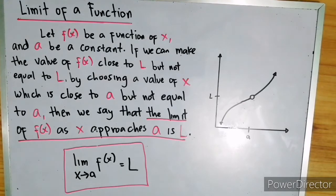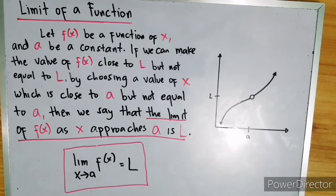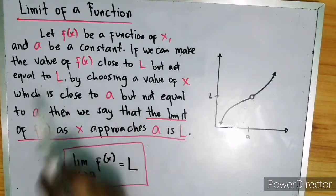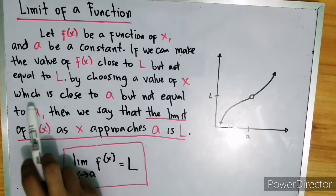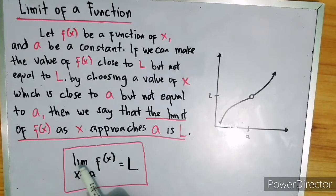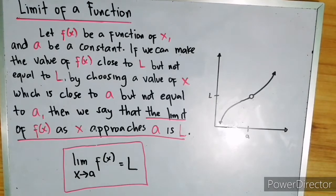So let's start with the definition of limit. Let f of x be a function of x and a be a constant. If we can make the value of f of x close to L but not equal to L by choosing a value of x which is close to a but not equal to a, then we say that the limit of f of x as x approaches a is L.